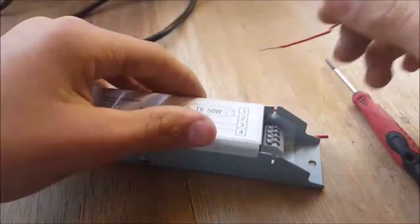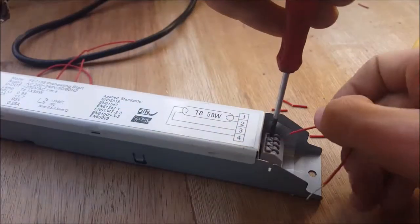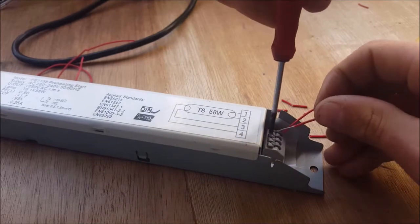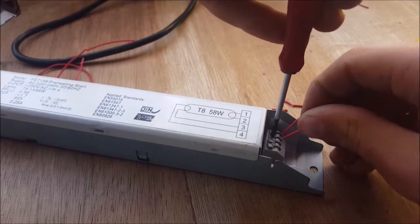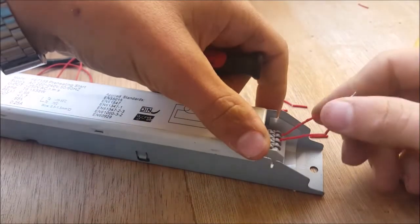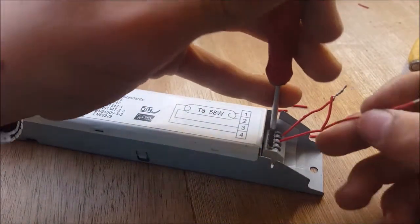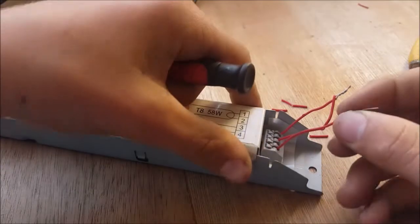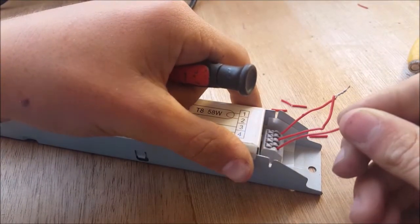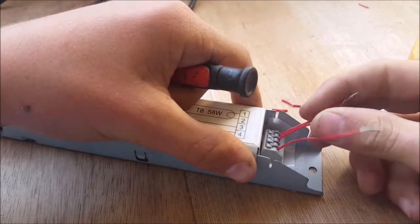So now I'm just going to cut 5 pieces of wire to wire everything up. Now grab 2 pieces of wire and insert 1 into number 1 and the other into number 2. Then join the 2 wires together. Then grab another piece of wire and put it into number 4. And just like that, we're ready from the wiring of the ballast.